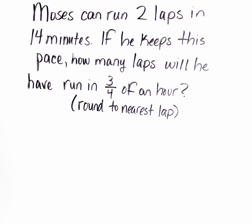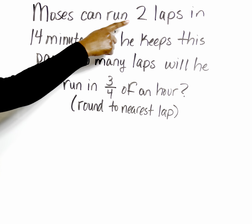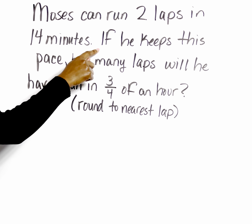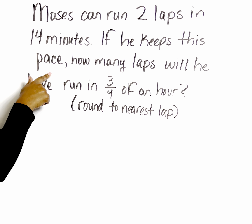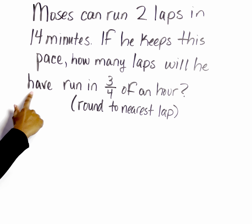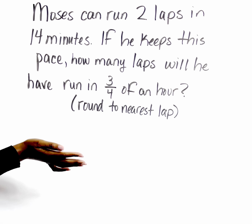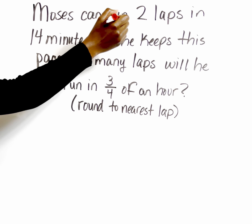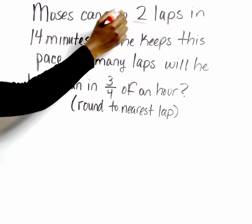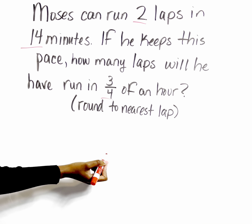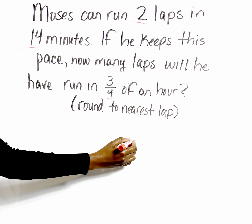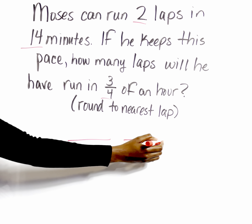Let's take a look at number 11 from Practice 3, Solving Proportions Given Different Units. The question says: Moses can run two laps in 14 minutes. If he keeps this pace, how many laps will he have run in three-fourths of an hour? So what is our trigger? The trigger is that we were given three values and we are looking for a fourth. So we're going to go ahead and set up our ratios.